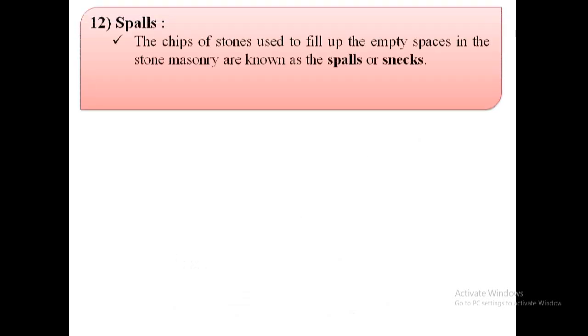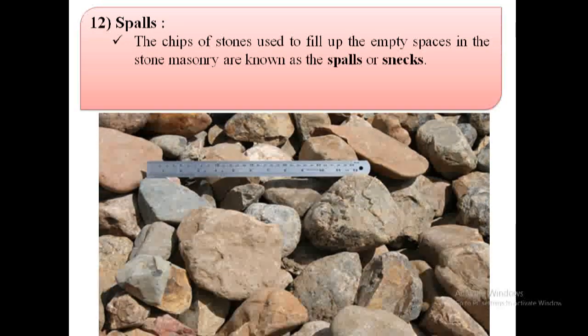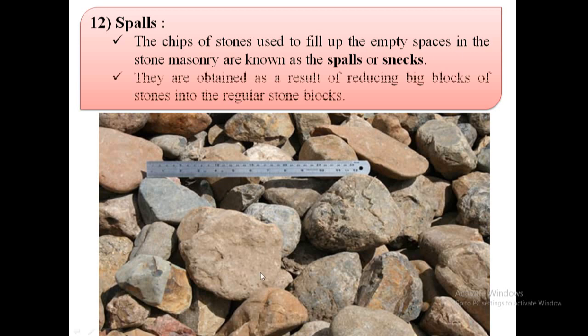The next term is spalls. The chips of stones used to fill up the empty spaces in stone masonry are known as spalls or snakes. As shown in the image, spalls are obtained as a result of reducing big blocks of stones into regular stone blocks.